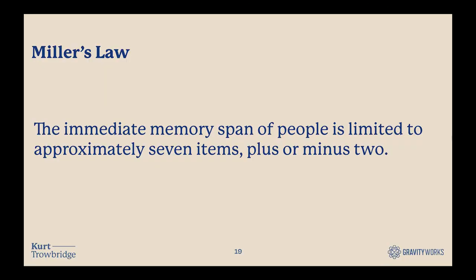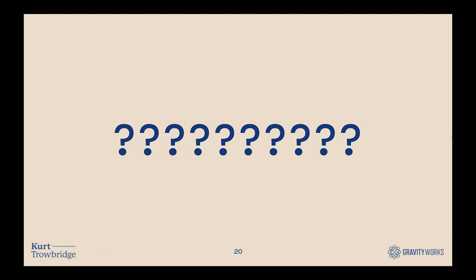Miller's Law comes up in user experience and psychology. Miller states that the immediate memory span of people is limited to approximately seven items, plus or minus two. He stressed that the 'magical number seven,' as he called it, isn't a hard and fast rule, but it's an average he'd see fairly often. This shows that trying to hold on to a lot of information in your memory is really likely to fail. Think back to the ten numbers I showed you a few minutes ago — since then we've talked about several concepts and you've got a lot of other thoughts in your brain. Do you remember those numbers? Miller's Law might suggest you don't.